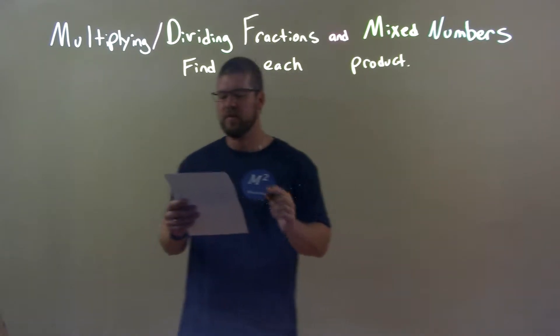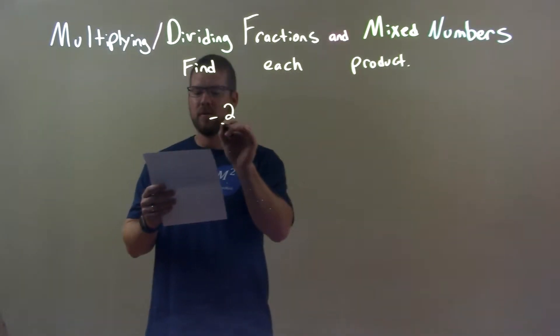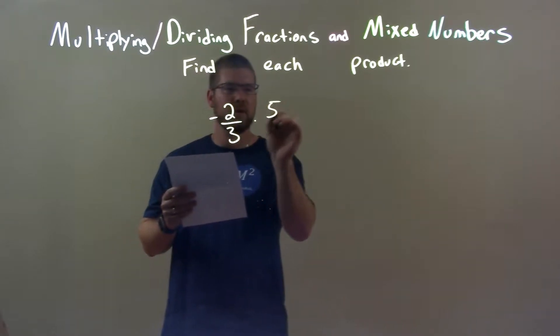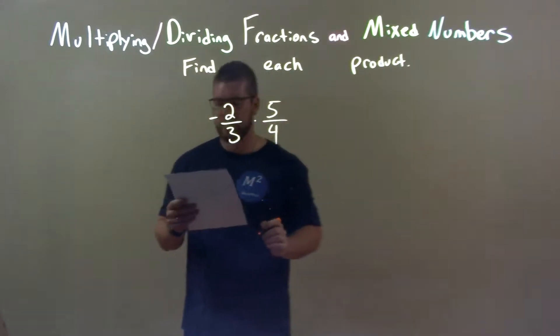So, if I was given these numbers, negative 2 over 3 times 5 over 4, okay?